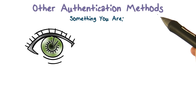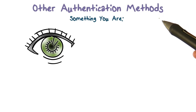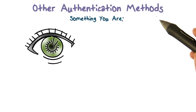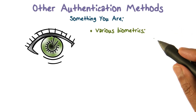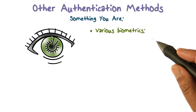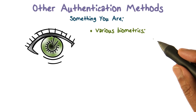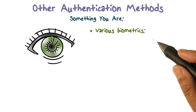The third method is something you are — that's the biometric method. So what exactly is that? There are a variety of biometrics and it should be unique to you. Somebody else shouldn't be able to use a biometric feature or set of features to impersonate you. So what are some examples?